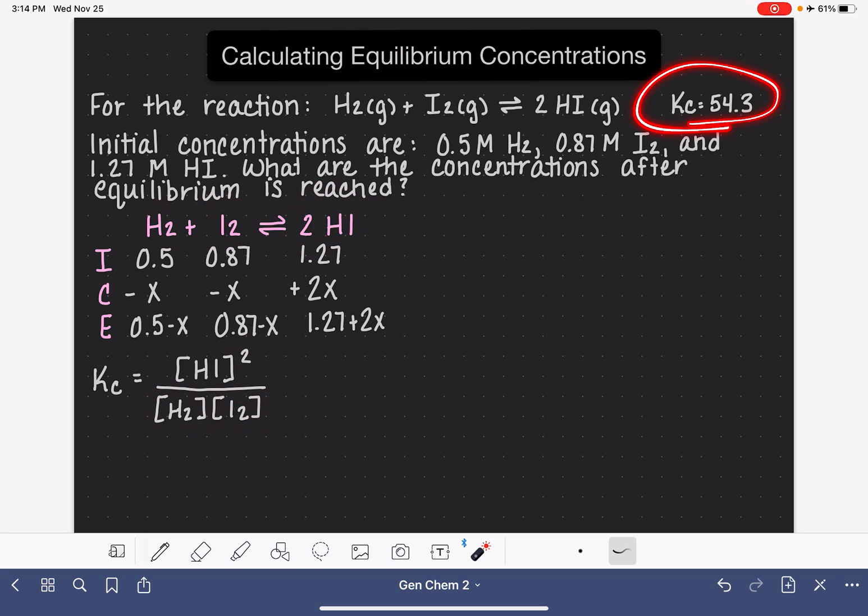The problem tells us the value of Kc. That's pretty normal. It's almost impossible to solve these problems without a value of the equilibrium constant K. So we're going to plug in our equilibrium constant. And then here, for our HI concentration, we're going to use this expression that we came up with in the ice table. So we're going to say, instead of saying HI, we're going to say 1.27 plus 2X, and then we're going to square it. For H2, the term that we came up with for H2 is 0.5 minus X. And then for I2, the term that we came up with is 0.87 minus X.